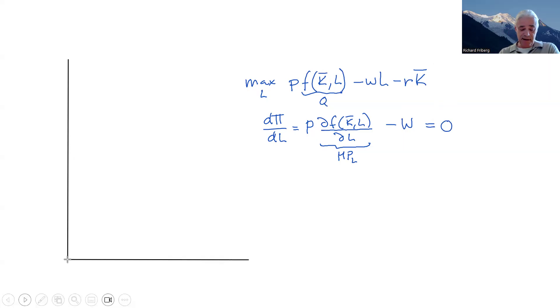Let's illustrate that in a simple graph. So we have the amount of labor here on the horizontal axis. And we have wage and price times marginal product of labor on the vertical axis. So let's draw the wage here first. So there's a particular wage that this firm is meeting. That's the wage in the market.